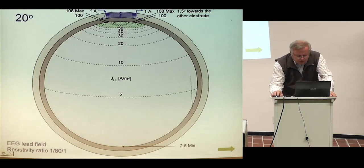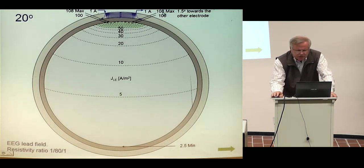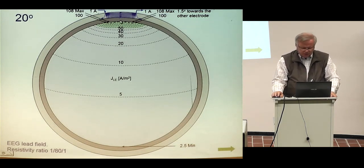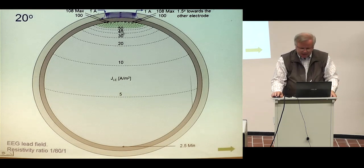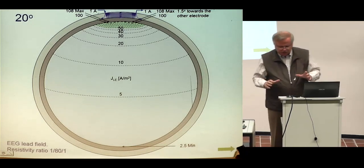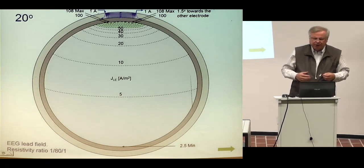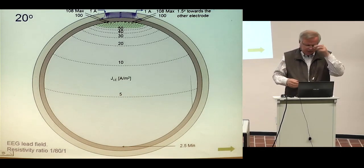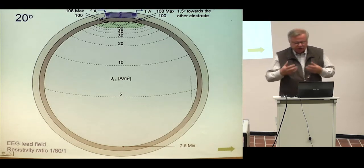In the close-electrode case, you see clearly how the measurement sensitivity is very low on the opposite side — 2.5 — while the maximum is 108. So it is 40 times higher under the electrodes, which means that with this kind of bipolar measurement, you get practically no signal anywhere else than just from under the electrodes. The basic calculation was made by Rush and Driscoll, and we recalculated the results, added the isosensitivity surfaces, and created the concept of the half sensitivity volume.